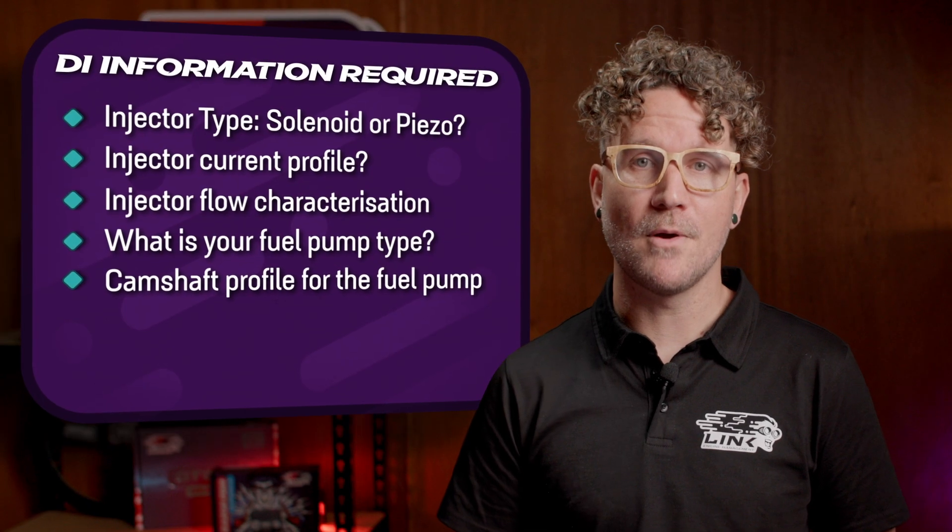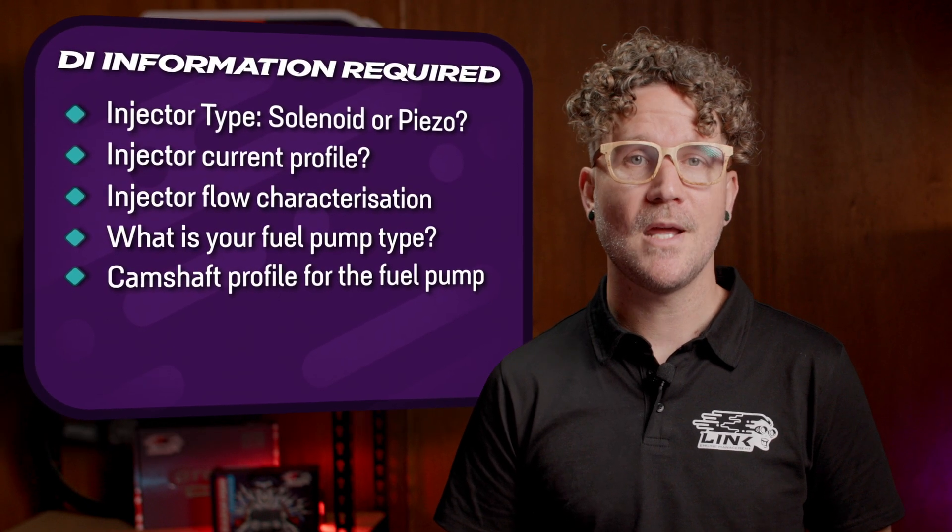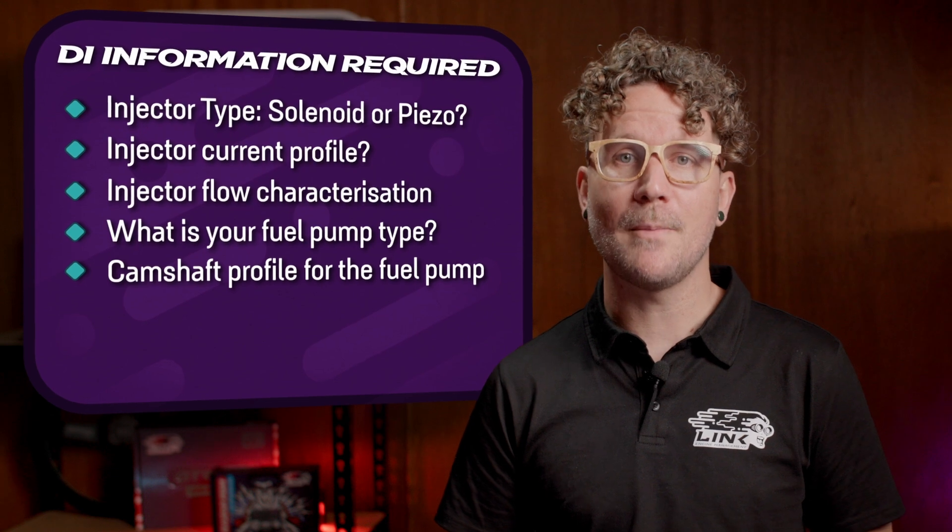To calculate the camshaft profile, you will need to measure the lift and duration of each cam lobe for the high pressure pump. Lift is the maximum height that the lobe raises the valve off its seat, and duration is the angle between when the lobe begins to lift the valve and when it returns to its seat. You will need this information to help determine the optimal timing for fuel injection. To find this yourself, you will require a dial gauge and a degree wheel. You will only need to establish the profile once per engine type.